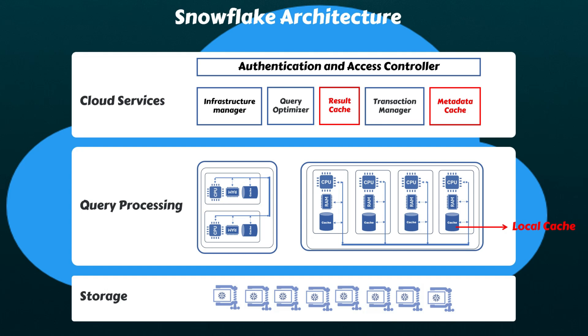Snowflake leverages a robust caching mechanism to deliver exceptional query performance. During query execution, the virtual warehouse retrieves relevant data or micro-partitions from the storage layer. This data is then temporarily cached locally within the virtual warehouse for faster processing. After the required processing, the results are returned to the user. Crucially, this cached data persists within the virtual warehouse until it's shut down, meaning subsequent queries requiring the same data can retrieve it directly from the local cache, eliminating the need to access the storage layer again. Although Snowflake does not explicitly state it, the local cache is likely SSD-based.